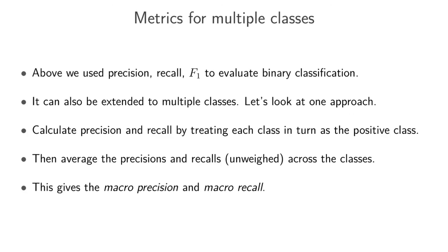What we've done so far is look at precision, recall, and F1 score for binary classification, but these metrics can also be extended to multiple classes. One approach is to calculate precision and recall by treating each class in turn as the positive class, then averaging them unweighted across classes - not looking at how often a particular class occurs. This gives you macro precision and macro recall, one way to get metrics usable on multi-class problems.